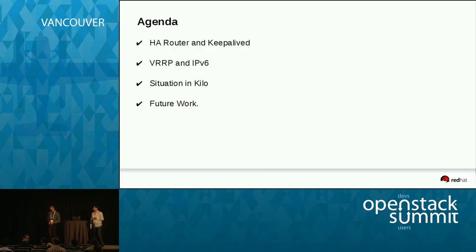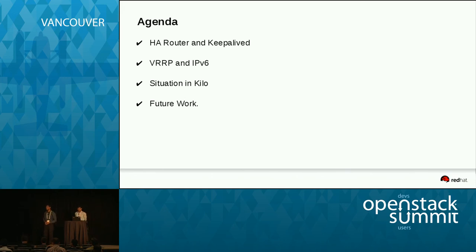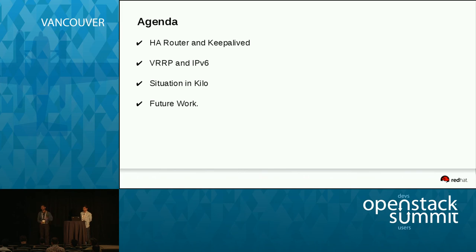Let's see what the agenda is. Initially, we'll brief about what an HA router is and how it is supported in the IPv4 world. And later on, we'll talk in more detail about IPv6 and how it is supported in Neutron L3.